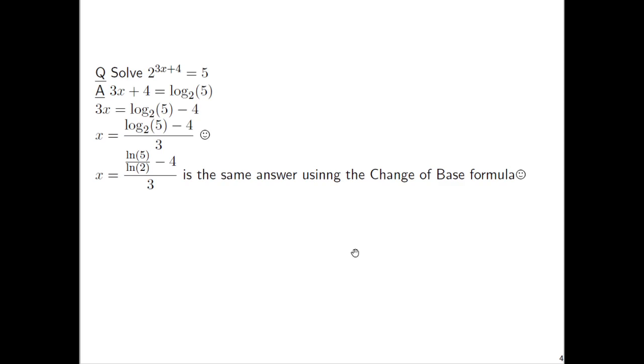By the way, you can rewrite the answer as this log base 2 of 5 part can be rewritten LN of 5 over LN of 2 using the change of base formula. Both of these are acceptable answers. If you're just doing something on paper, probably just this answer: x is equal to log base 2 of 5 minus 4 over 3. But if you want, you can also write x is equal to LN of 5 over LN of 2 minus 4 all over 3.